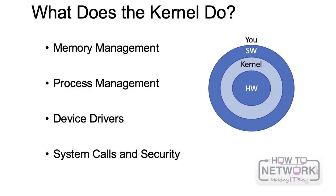The processes are not directly accessing the hardware. They are requesting communication via system calls to the kernel, and then the kernel analyzes whether that process can perform that task and how it should be done. The kernel then accesses and communicates with the hardware - sending instructions or receiving data from that specific hardware - and sends the response back to the software.